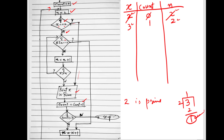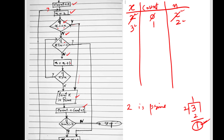The remainder is 1, not 0, so I move to the 'no' branch and increment n by 1 — n becomes 3. Now I check if x is greater than n: x equals n, so the condition is false. I move to 'no' and print '3 is prime.'